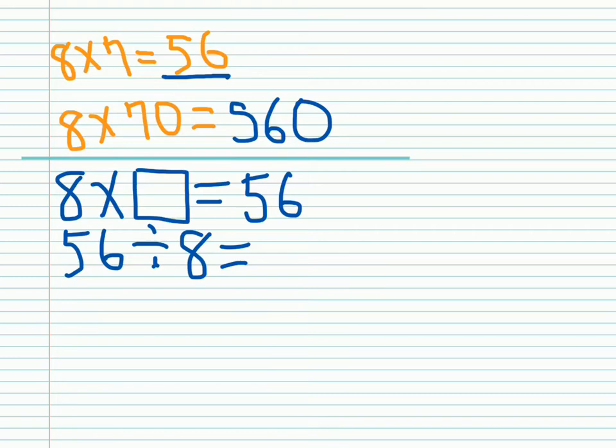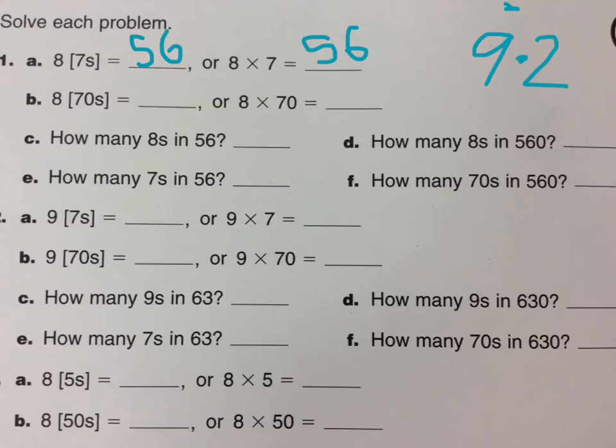We could look at this problem in two ways. We learned fact families, so we know the answer to this, which is seven. And we can write that here.